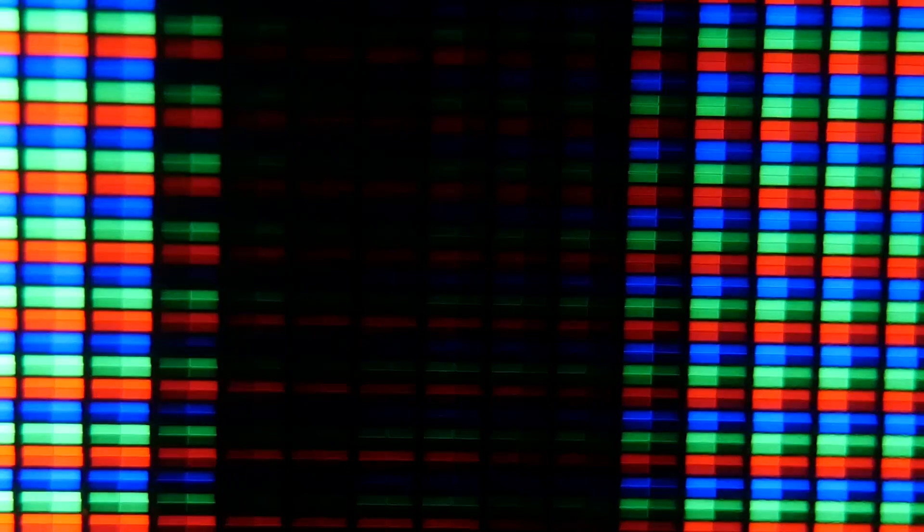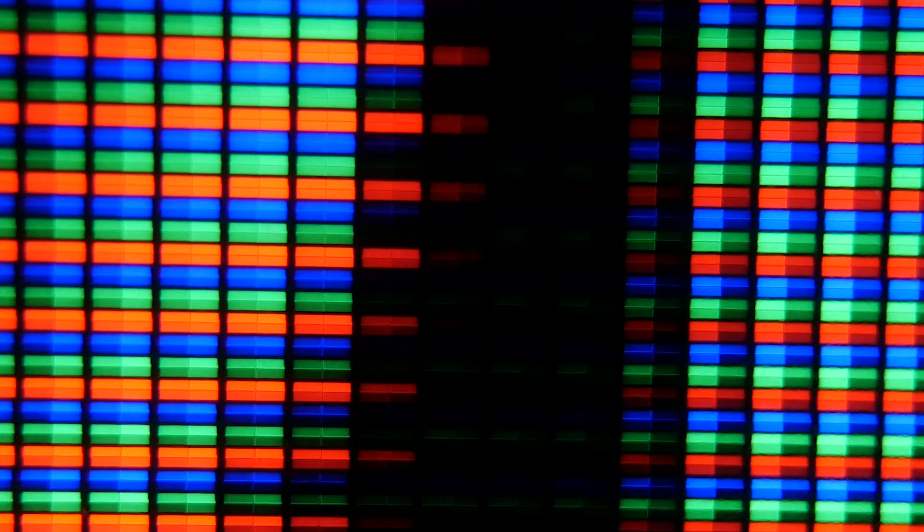In many LCD panels each subpixel is actually further divided into sub-subpixels. This probably increases the total number of discrete brightnesses each color can make, and thus allows for more precise control over the panel and a larger number of possible colors. Someone please correct me if that's not what these sub-divisions do.